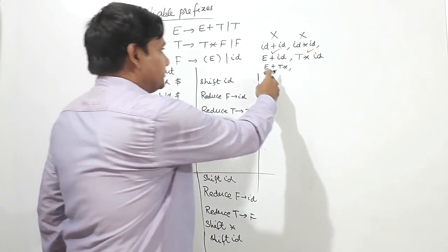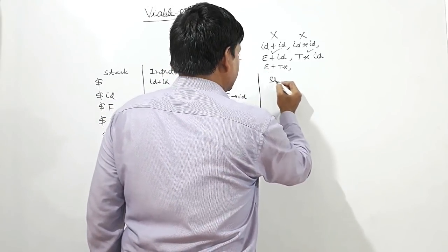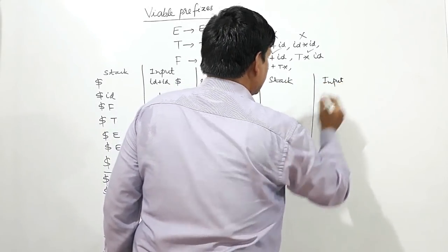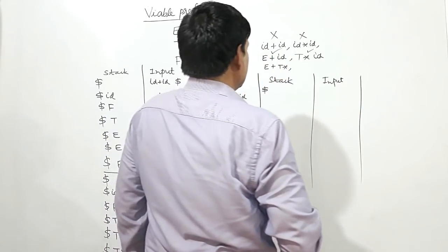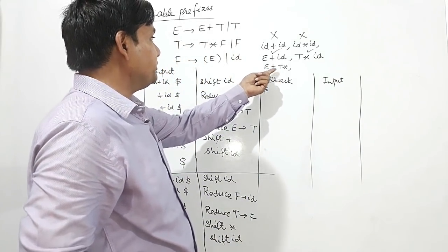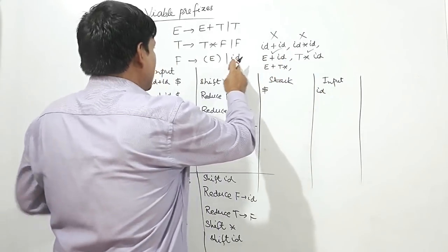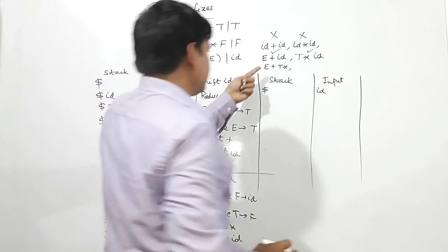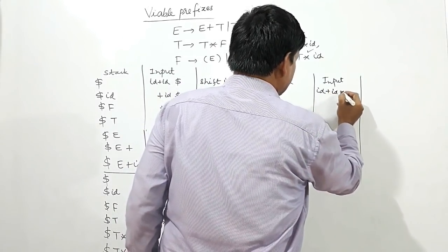Now I have to check where E plus T star is a viable prefix or not. This is the stack and this is the input. I will take ID plus ID star ID as input, because ID can be reduced to F, F can be reduced to T, T can be reduced to E — so in place of E and T I can write ID.